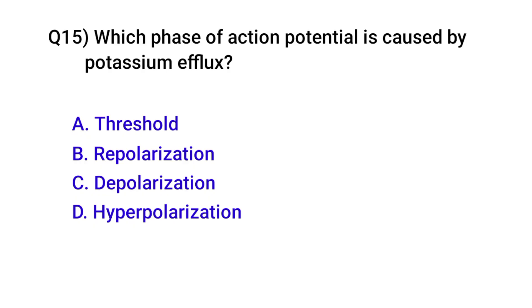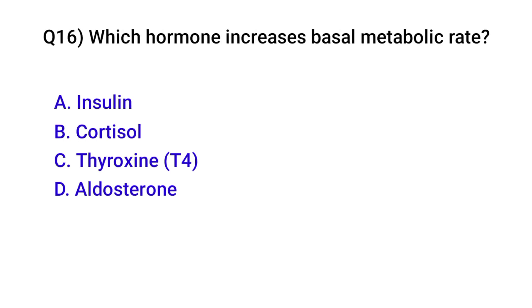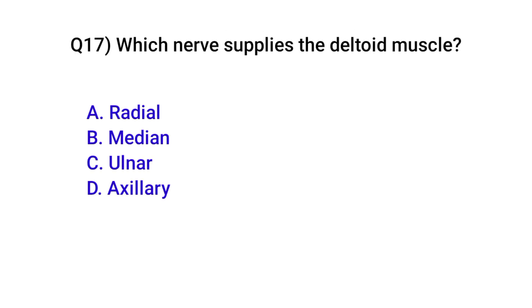Question number fifteen: Which phase of action potential involves repolarization? Correct option is C. Question number seventeen: Which nerve is used to test the auxiliary nerve — correct option involves the axillary nerve.